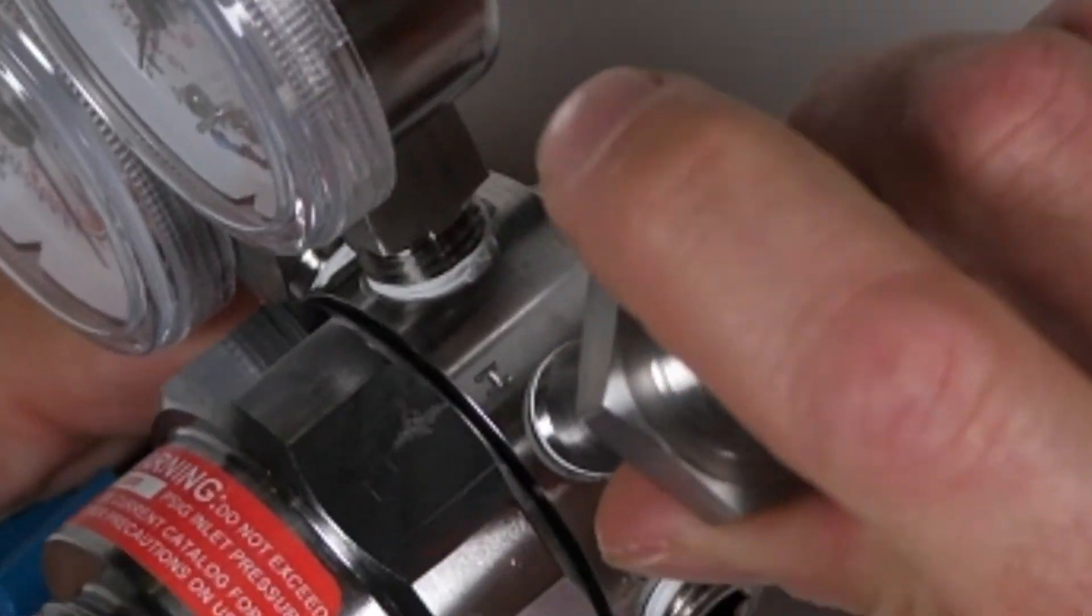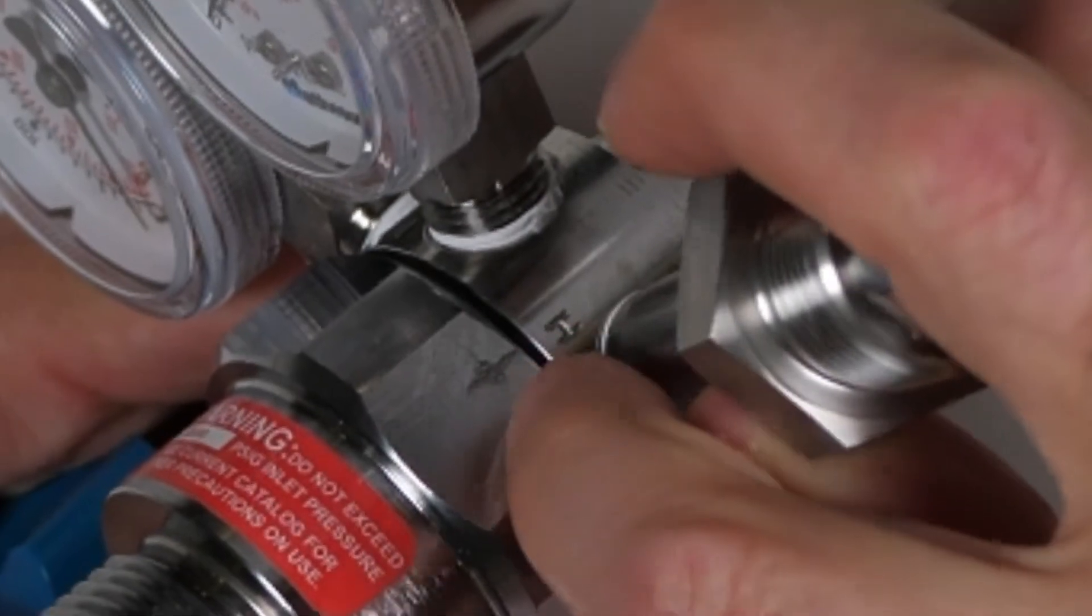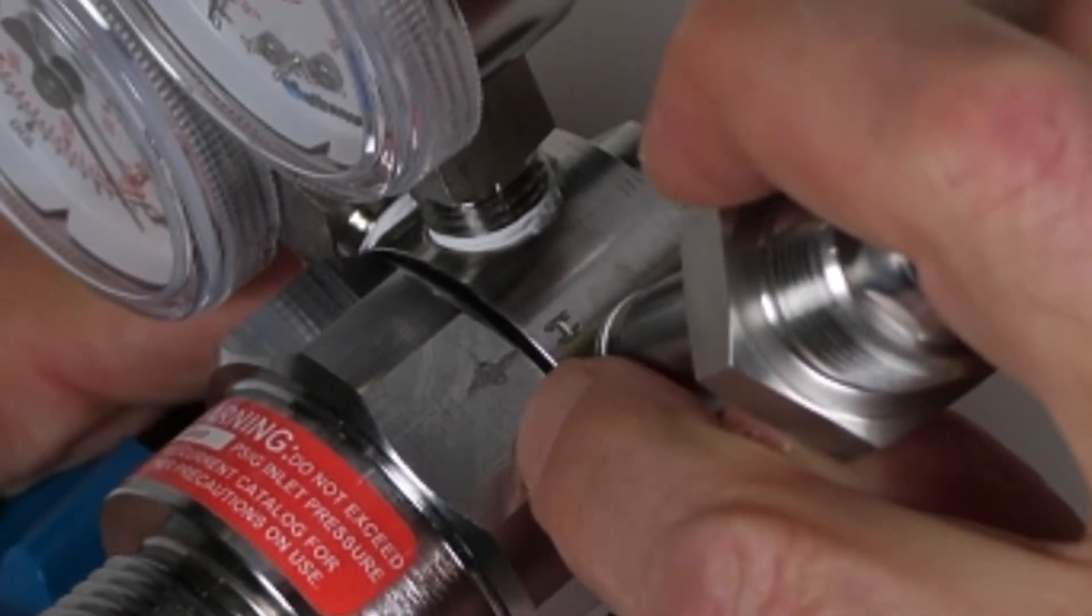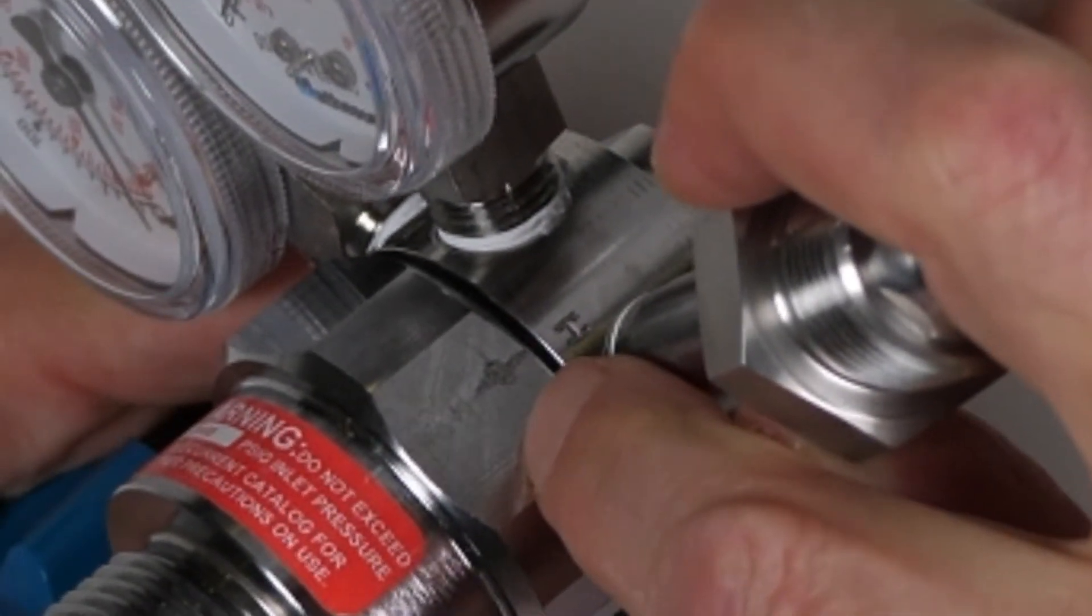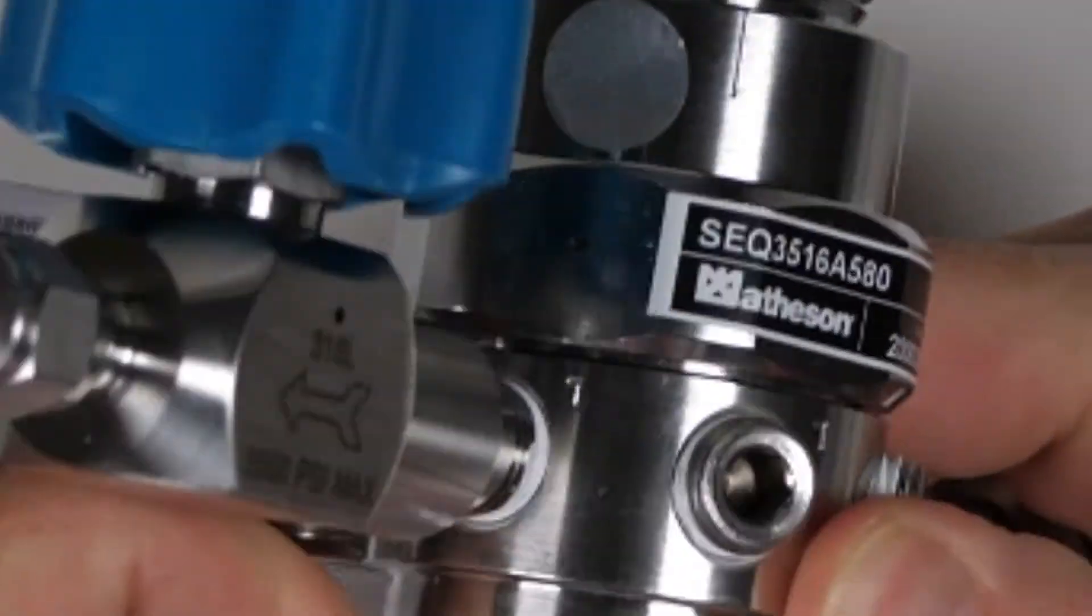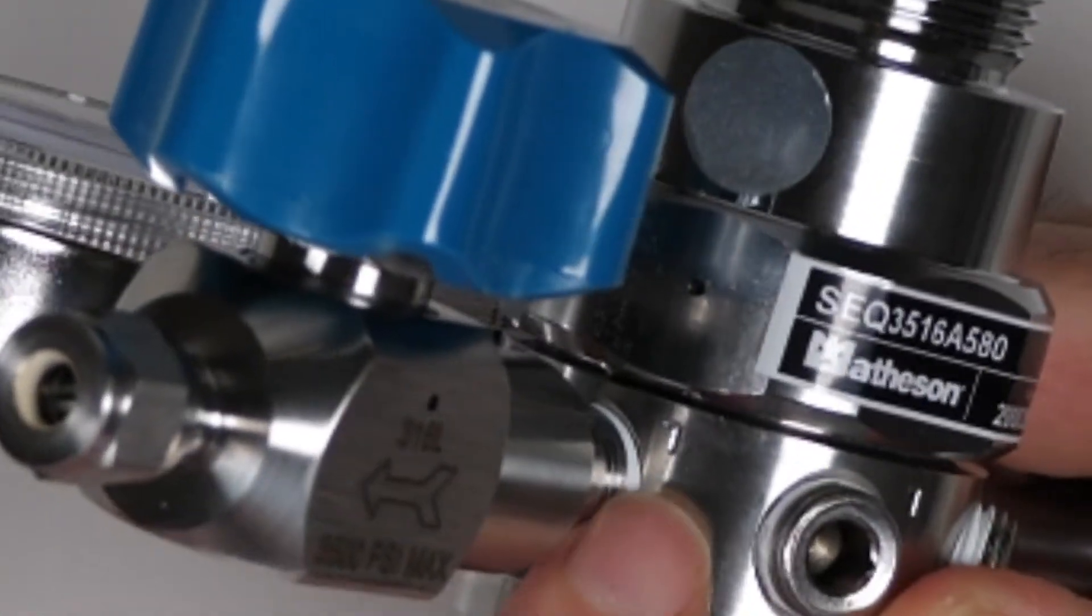The CGA fitting is in a high-pressure port marked with an H. The outlet valve is in a low-pressure port marked with an L.